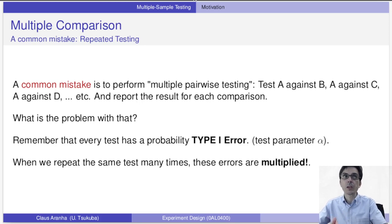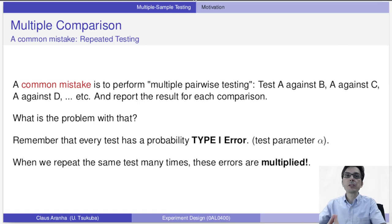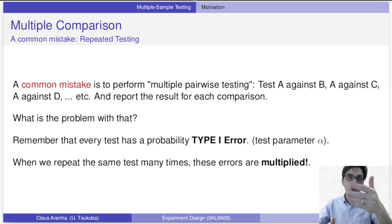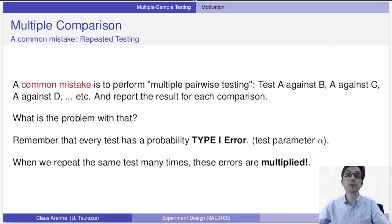What's the problem with that? Remember that every time we do a statistical test, there is a probability of the test itself being wrong — the type 1 and type 2 errors we discussed. When we repeat the same test many times, these errors are multiplied. Imagine a test that is wrong only 5% of the time. If you do it two times, that probability grows. Three times, it grows further. Four or five times, we're already looking at a test that will be wrong maybe 20 or 30% of the time — our test is no longer reliable.